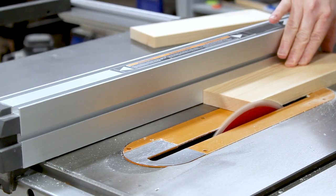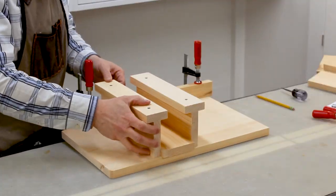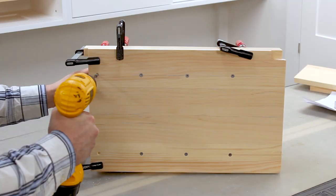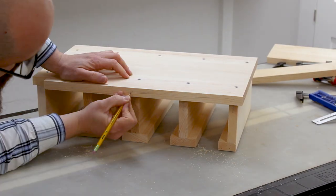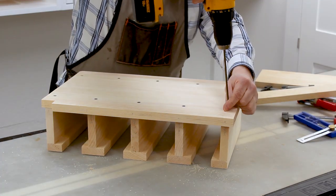To help position the other hangers, I ripped a piece of 1 by 4 to 3 and 3 eighths inches. Next, I labeled the location of each hanger. Then I removed the screws so I could apply the finish.